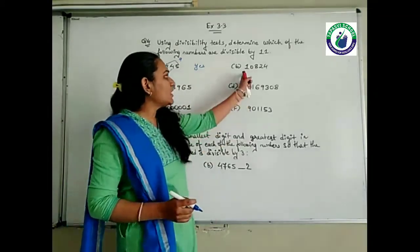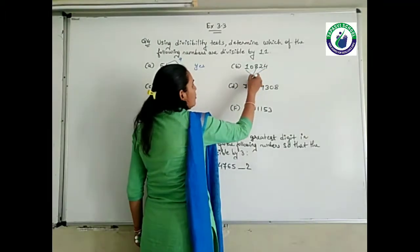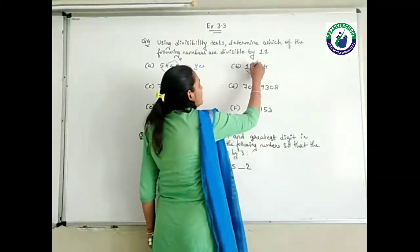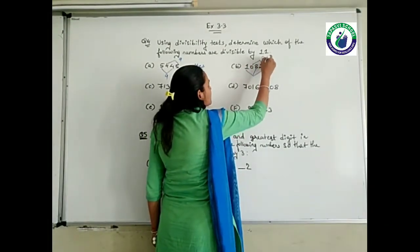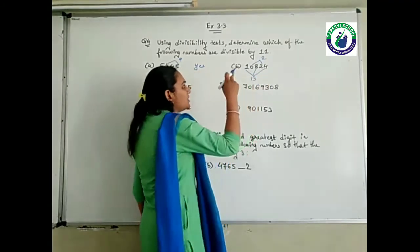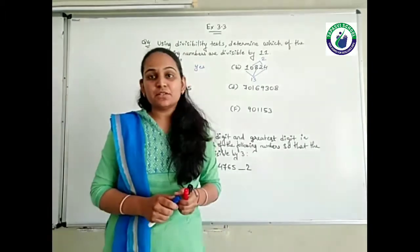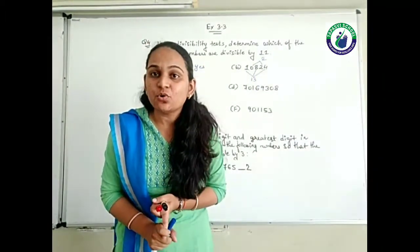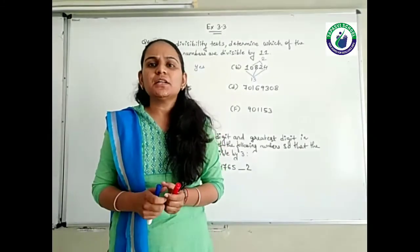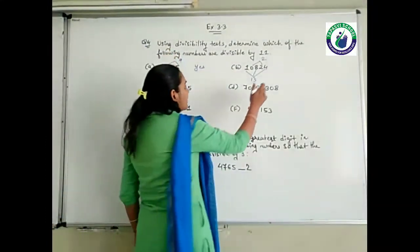Next number, 10824. I am adding the odd place digits — 0 plus 2 is 2. Even place digits — 1 plus 8 is 9, and 9 plus 4 is 13. The difference is 13 minus 2, that is 11. So 11 is divisible by 11 — yes, this is divisible by 11.